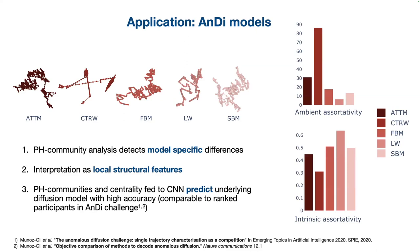We saw that by analyzing persistent homology communities we could detect model-specific differences across the five different models studied by the AnDi challenge, and given the high interpretability of our technique, we could translate these differences into local structural features of each model. Inspired by this, we constructed a very simple convolutional neural architecture taking the persistent homology hypergraph computed from a trajectory as input to predict the underlying anomalous diffusion model, and we were able to predict the model with high accuracy — good enough to rank well in the challenge, even though this was just a by-product of our analysis.